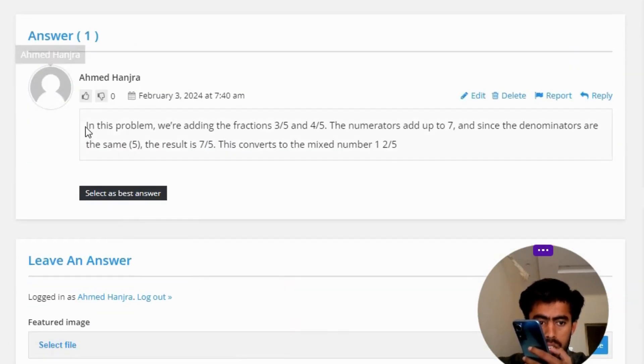In this problem, we are adding the fractions 3 by 5 and 4 by 5. The numerators add up to 7 and since the denominators are the same into 5, the result is 7 by 5. This converts to the mixed number 1, 2 by 5.